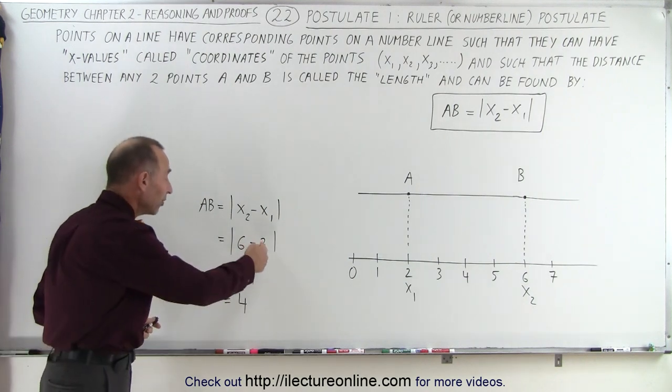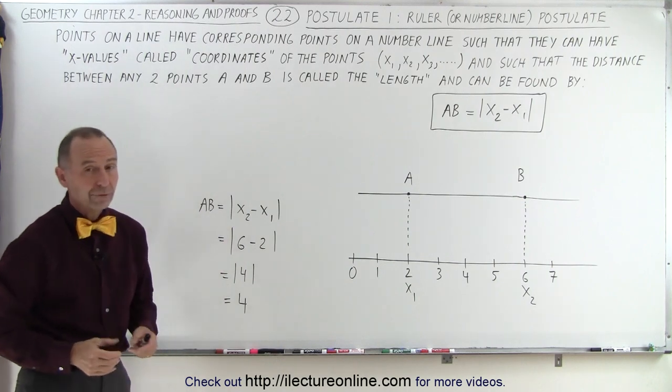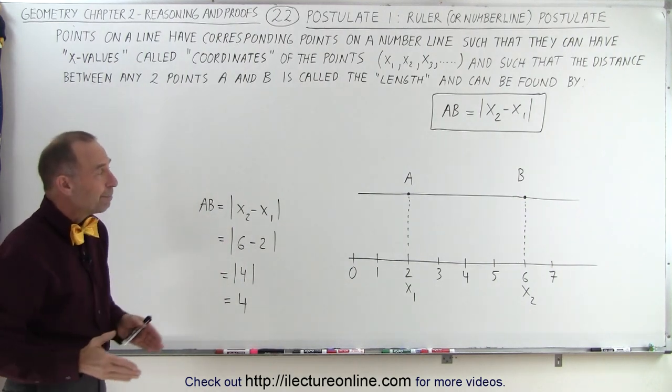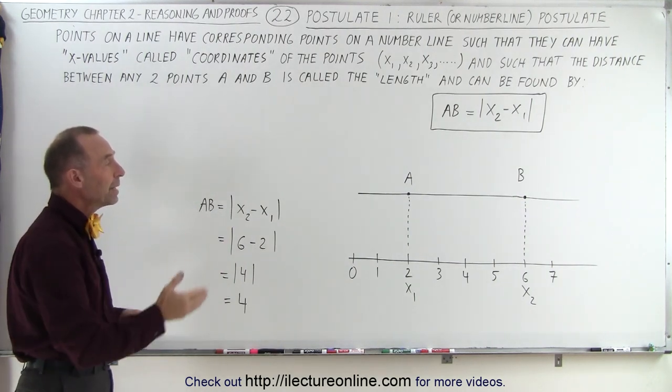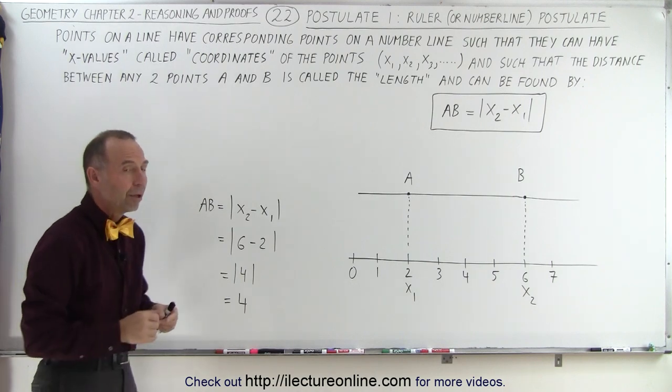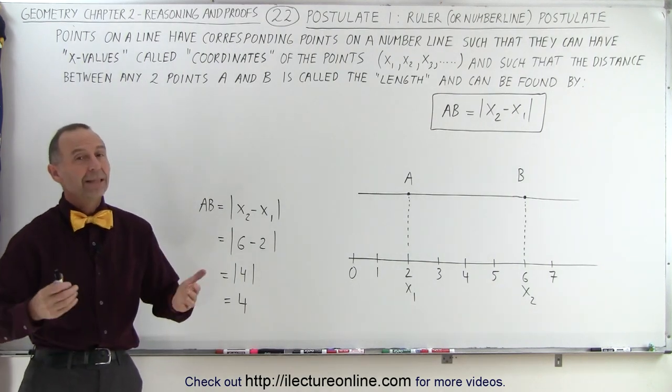If you go 2 minus 6, we get negative 4, but the absolute value of negative 4 is 4 again. And 4 would be the length between A and B, or the length of the line segment between A and B. And that's how it's done.